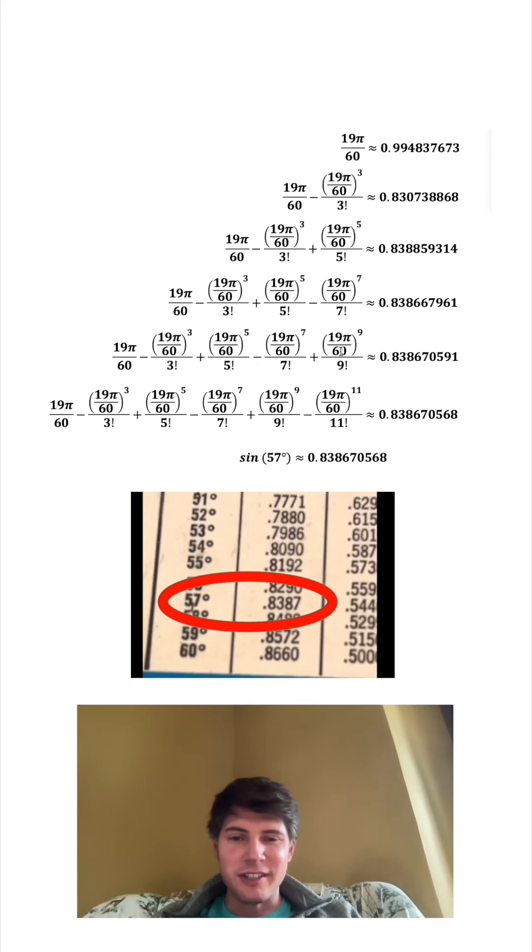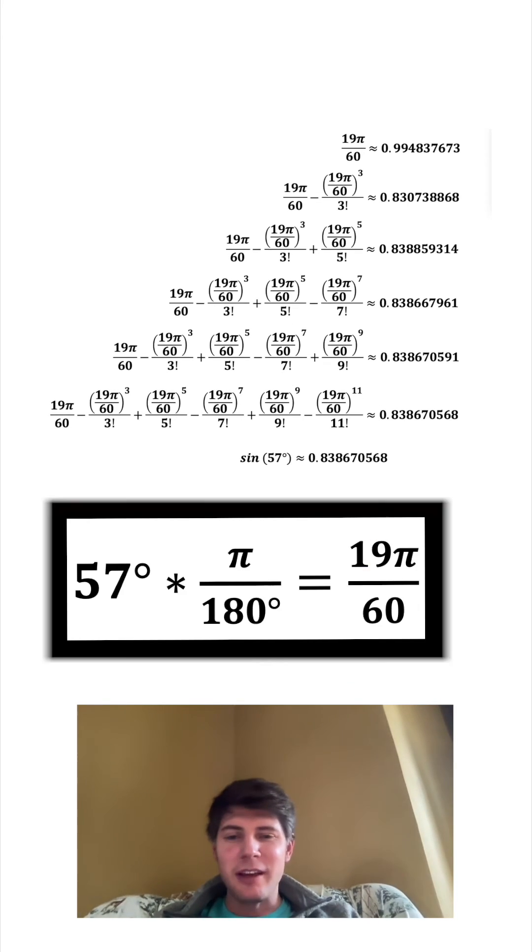The reason I'm doing 19 pi over 60 instead of 57 is because this function is evaluated in radians. So we had to convert the 57 into radians, and we just do that by multiplying the 57 times pi over 180.